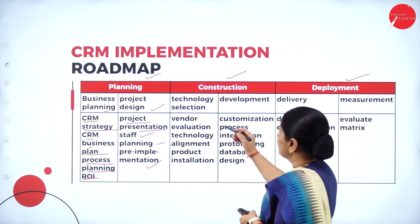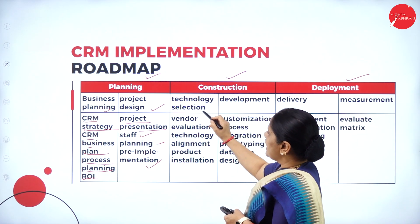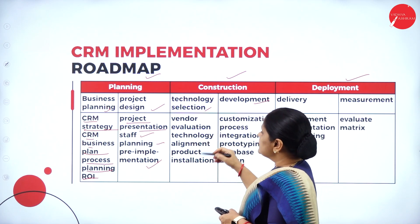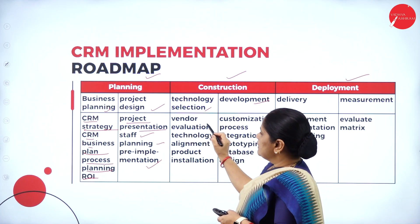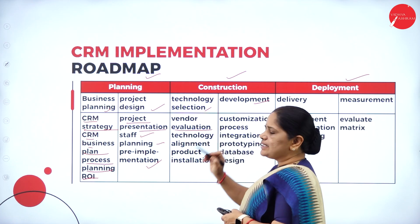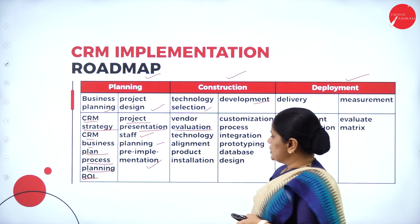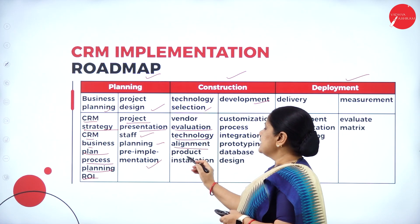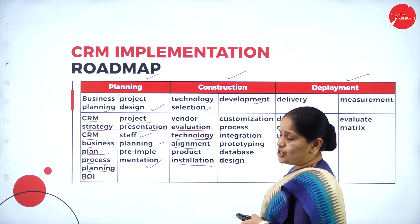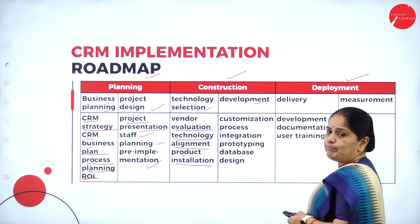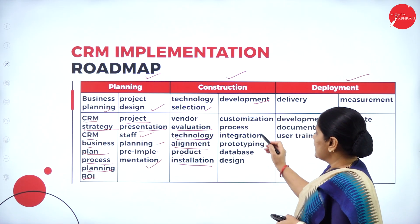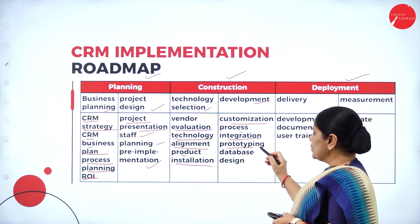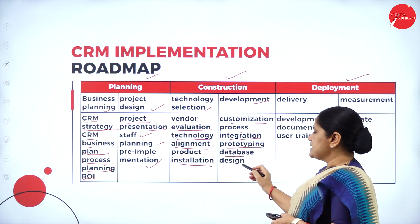In the construction section, we have technology selection and development. Under technology selection, the key aspects are vendor evaluation, technology alignment, and product installation. Under the development section, we have customization, process integration, prototyping, and database design. I will be elaborating on all of these in the next few minutes.